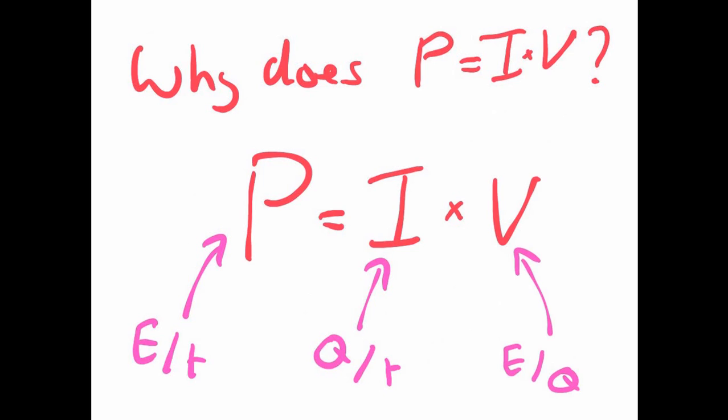So we've got charge and per charge, and they cancel out, leaving us with energy per time, which is what power is. So just by timesing I times V, I get power.